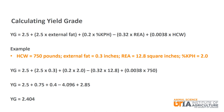I do not think it is important to memorize this formula, but I do think going through the calculations helps you remember how each factor can affect yield grade. Remember, we said earlier that external fat had the most effect on yield grade. You see this by it having the highest multiplier at 2.5 in the formula compared to rib eye area, hot carcass weight, and percent KPH.